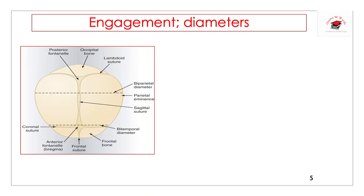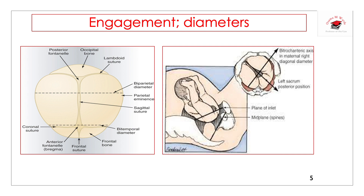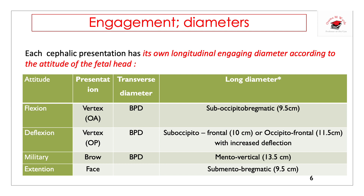The transverse engaging diameter of the head is the biparietal diameter, which is 9.5 cm, and it is the transverse engaging diameter of all cephalic presentations except in the asynclitic head, where the engaging diameter is the subparietal diameter. In breech presentation, the engaging diameter is the bitrochanteric diameter, as shown in the diagram.